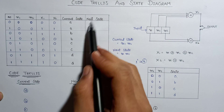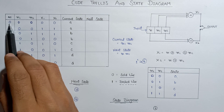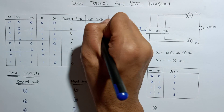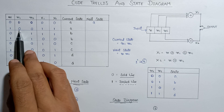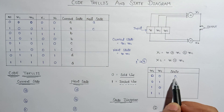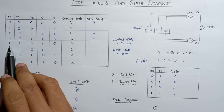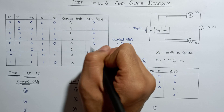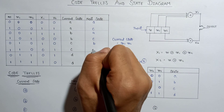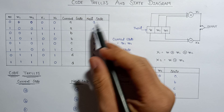Now let's write the values for the next state. If m is 0 and m1 is 0, so 00 gives state A. Similarly, 00 gives state A, and 10 results in state C. 01 indicates state B and 11 indicates state D. So that's how we can evaluate the next states.